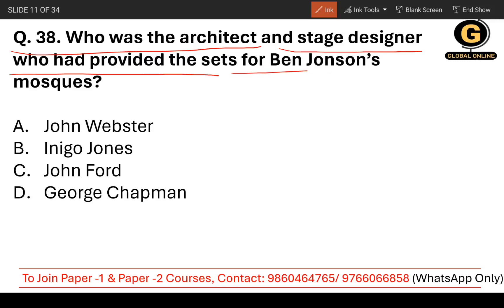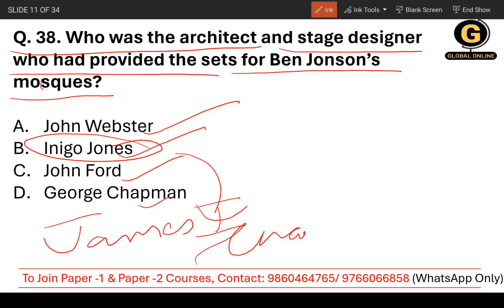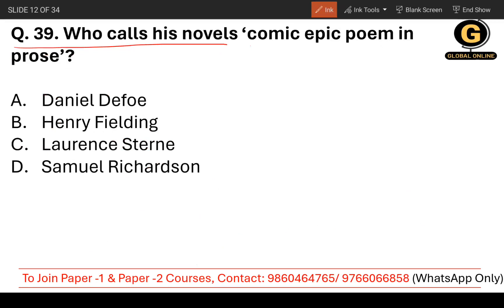Question number 38: Who was the architect and stage designer who provided the sets for Ben Jonson's masques? The options are John Webster, Inigo Jones, John Ford, or George Chapman. Inigo Jones collaborated with the playwright Ben Jonson and helped him produce a series of masques — both for James the First and also for Charles the First. So option B, Inigo Jones, is the correct answer.